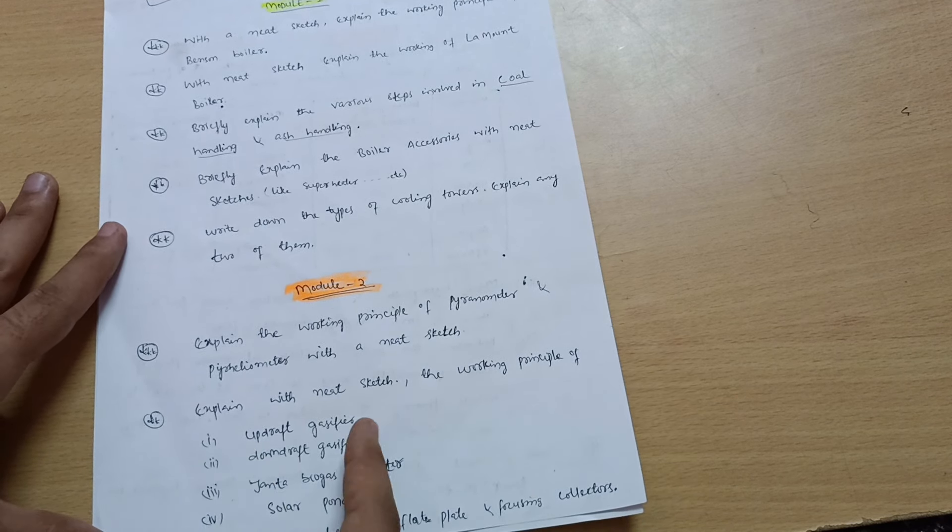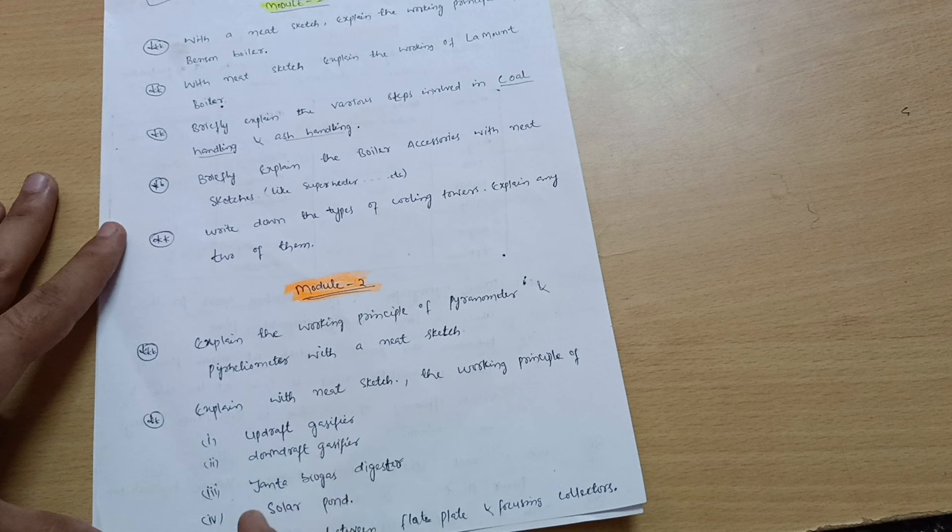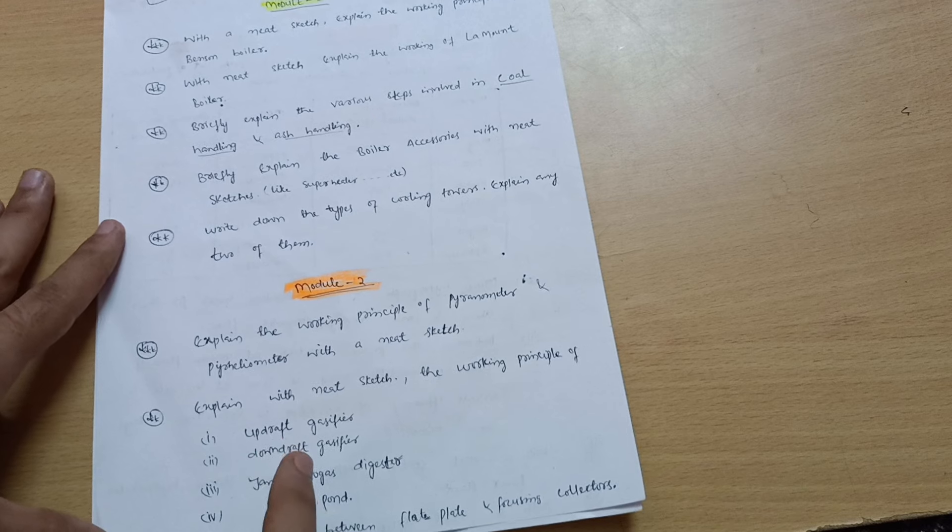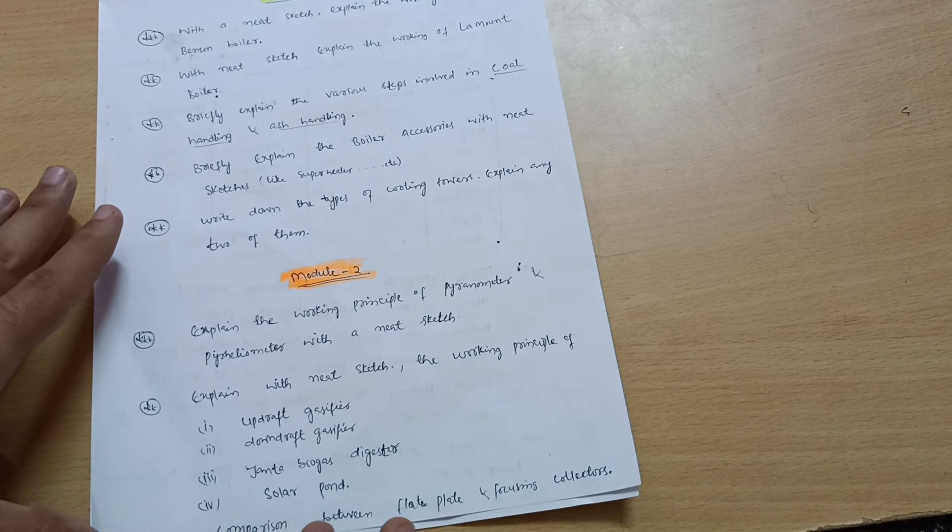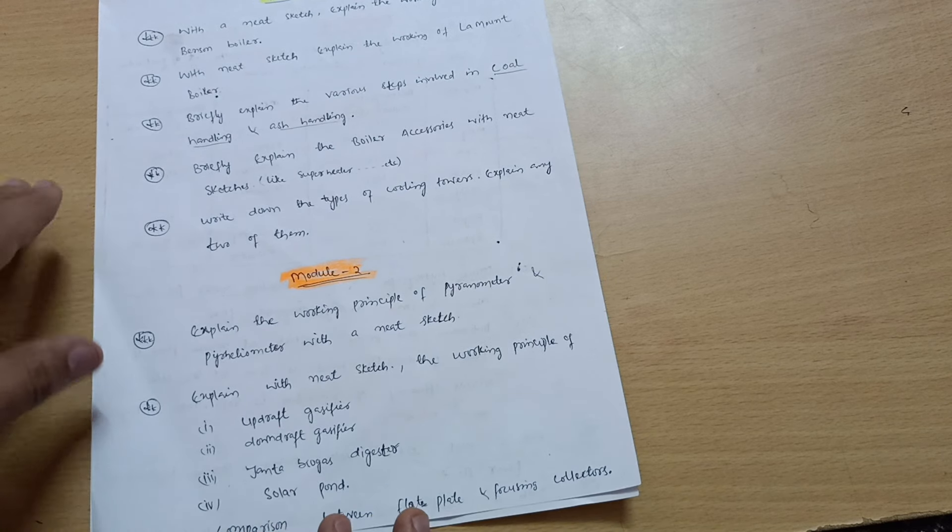Next is explain with neat sketch the working principle of updraft gasifier, downdraft gasifier, or Janata biogas digester, or solar pond. These four you have to focus on the diagrammatic part and try to understand the theoretical part in your own convenient language. Rest of the theory you have to just fill down the papers.